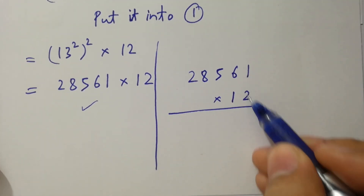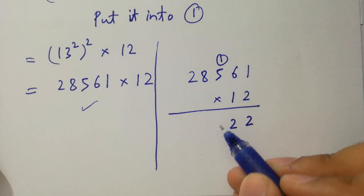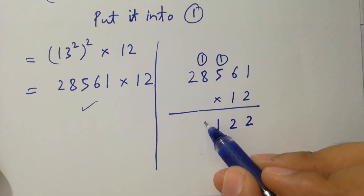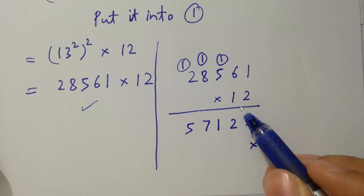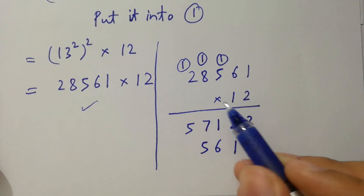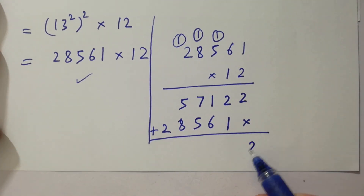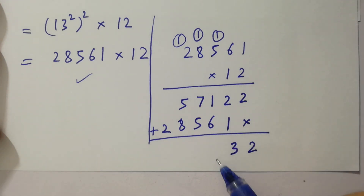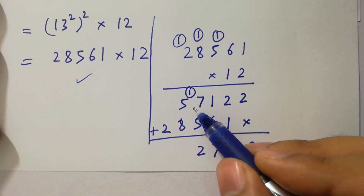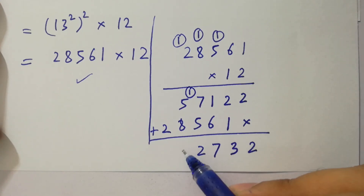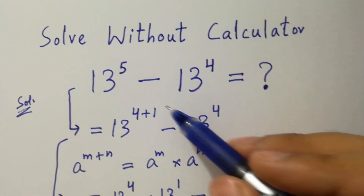Multiplying 28561 by 2: 2 times 1 is 2, 2 times 6 is 12 write 2 carry 1, 2 times 5 is 10 plus 1 is 11 write 1 carry 1, 2 times 8 is 16 plus 1 is 17 write 7 carry 1, 2 times 2 is 4 plus 1 is 5. Then multiplying by 1 (the tens digit) and adding, carrying through the steps, we get 5 plus 1 is 6, 6 plus 8 is 14, write 4 carry 1, and 1 plus 2 is 3. So finally, 13 to the power 5 minus 13 to the power 4 is equal to 342732.